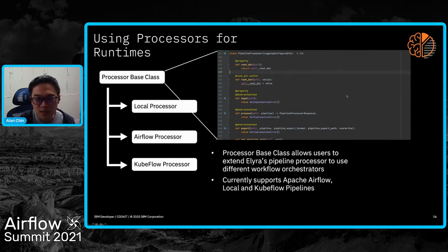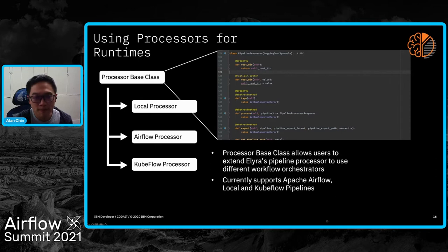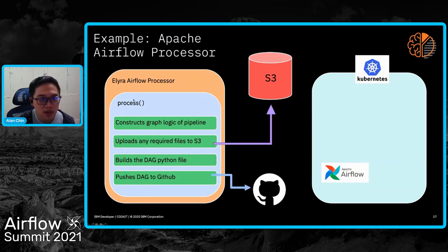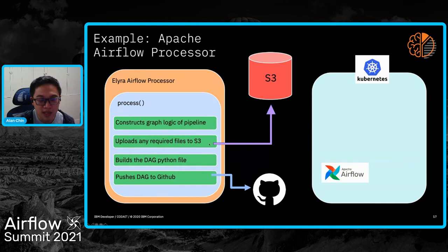These methods and abstract methods can configure containers to properly set resources, environmental variables, et cetera. With the Apache Airflow processor, here's a high-level overview of what happens when you create a pipeline. When you go to submit, our process constructs a graph logic of the pipeline. It figures out what dependencies, local files, and datasets the pipeline requires to run correctly and submits that to S3 object storage. It then builds the DAG and pushes the DAG to GitHub.